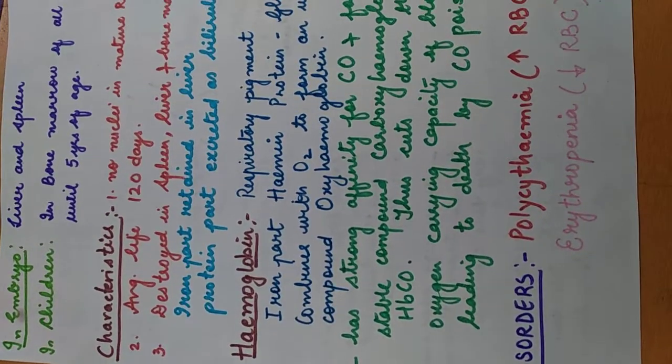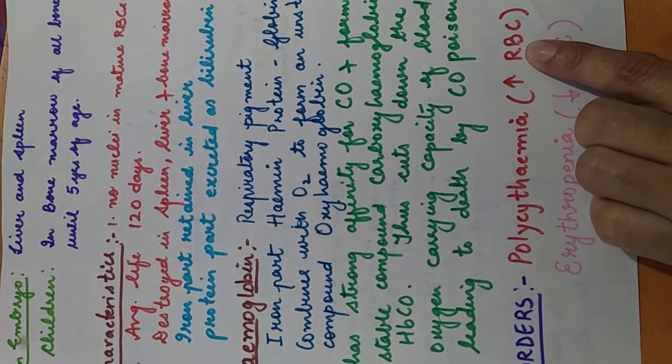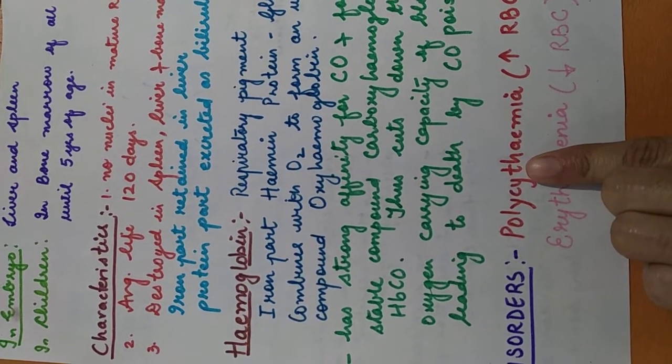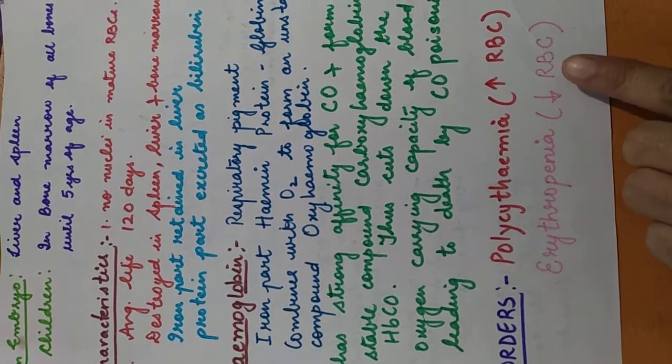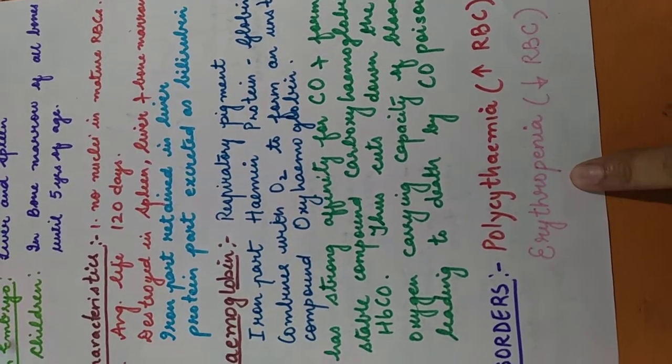Now, what are the different disorders related with these RBCs? When the number of RBCs is increased, the condition is known as polycythemia. And when the number of RBCs decreases in your blood, the condition is known as erythropenia.